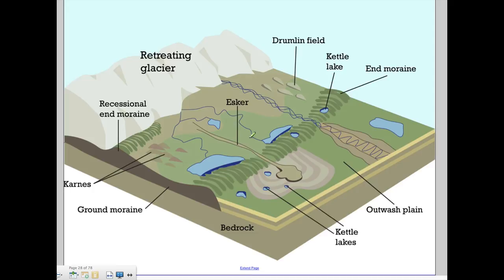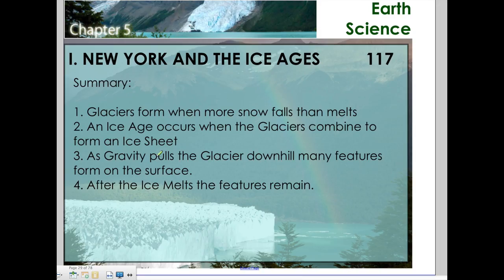Here's a picture that gives you all of these features at once: drumlins, kettle lakes, and moraines — showing all the features that a glacier can make.